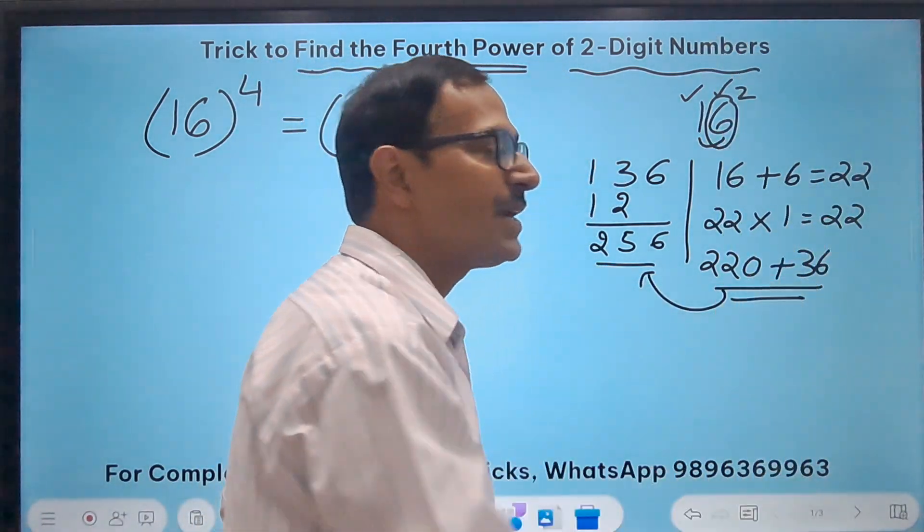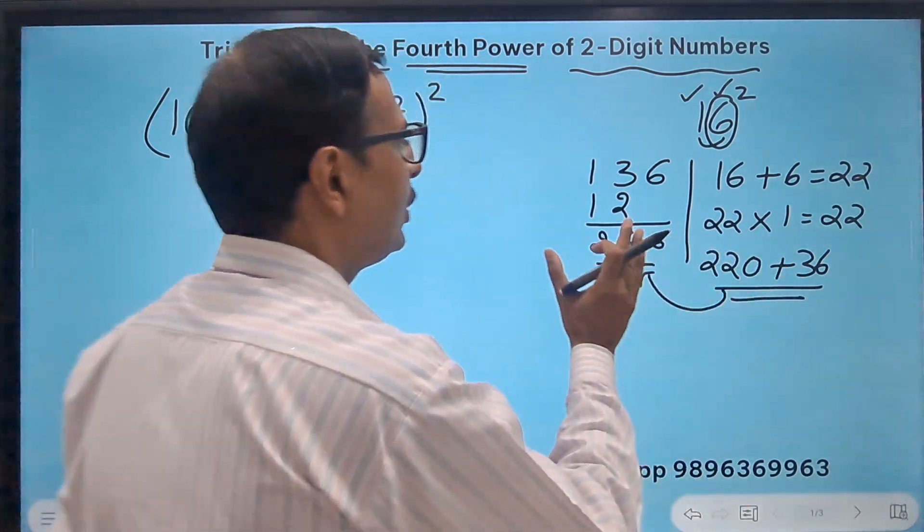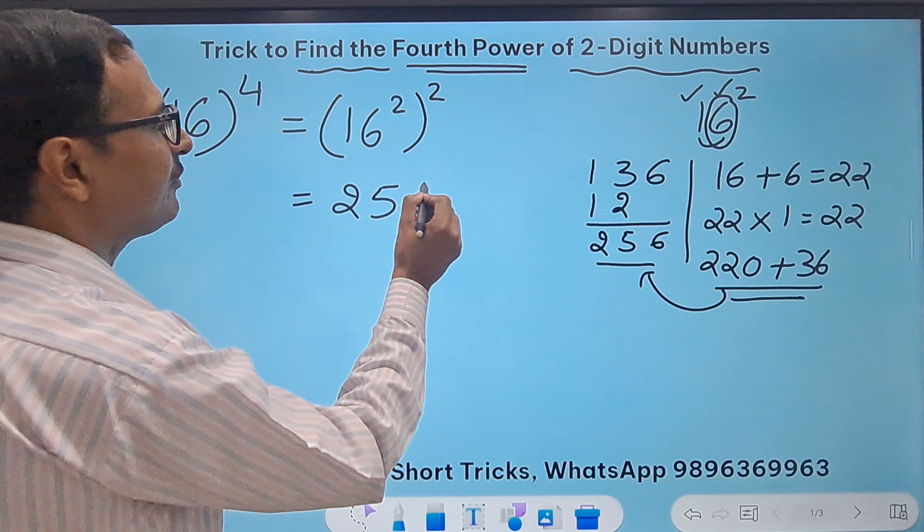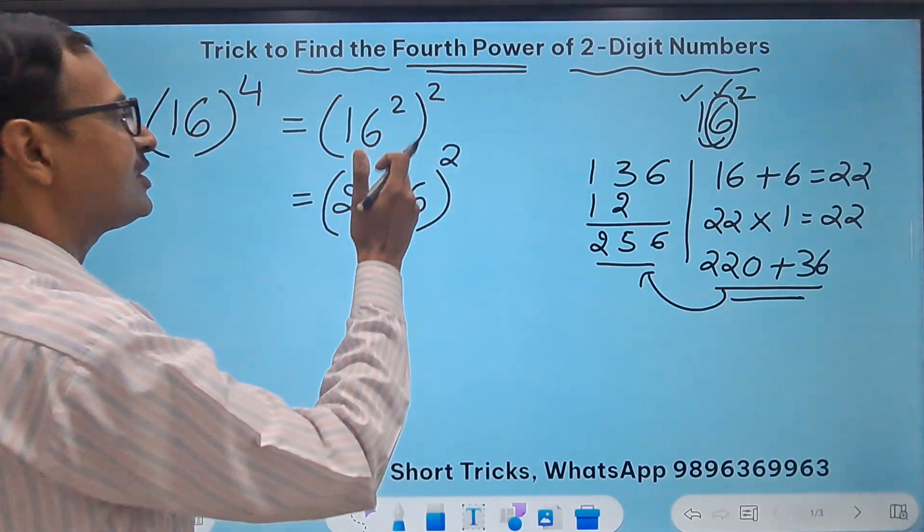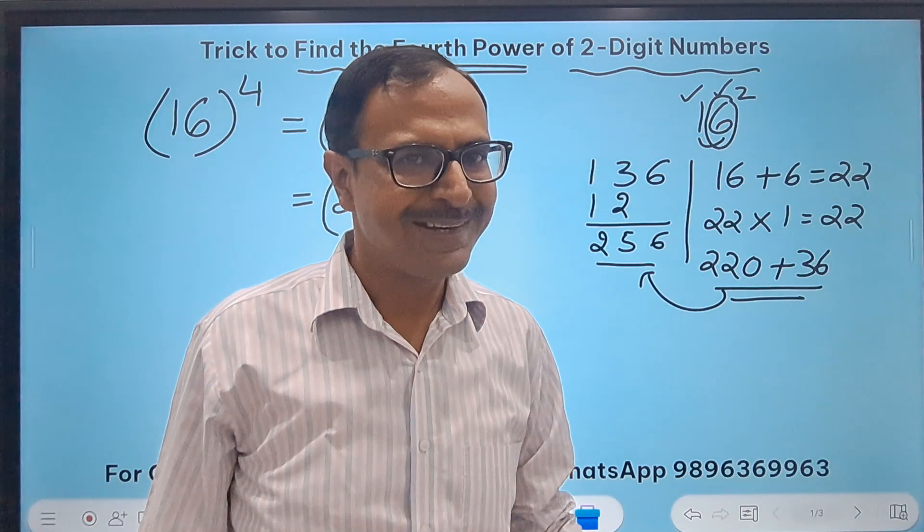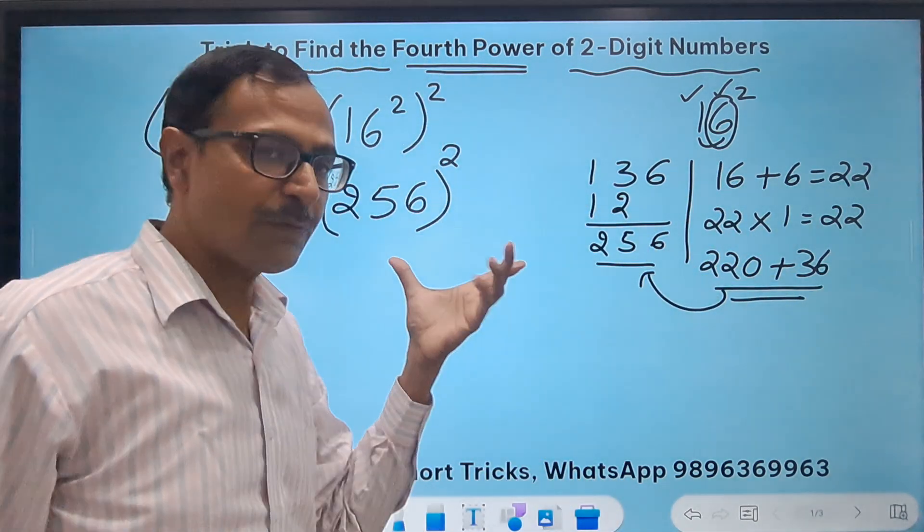Now this is the trick which I'm going to use for squaring the numbers and for finding the fourth power also. So now I know that 16 square is actually 256, and now I have to do 256 square to get the fourth power of 16, right? Can we extrapolate this method to find the square of 256? Let's try.